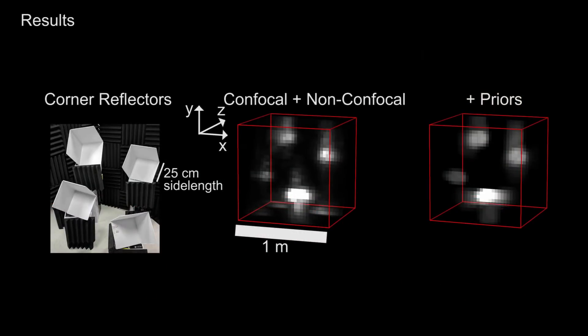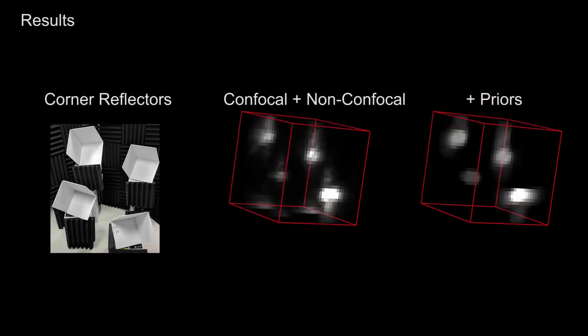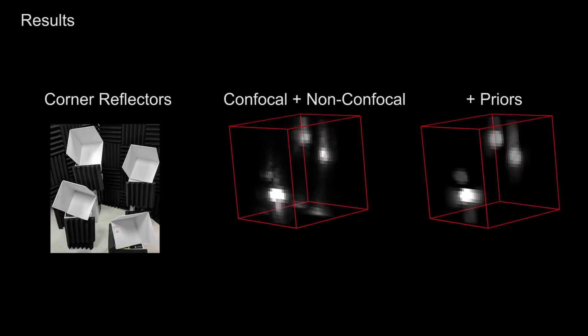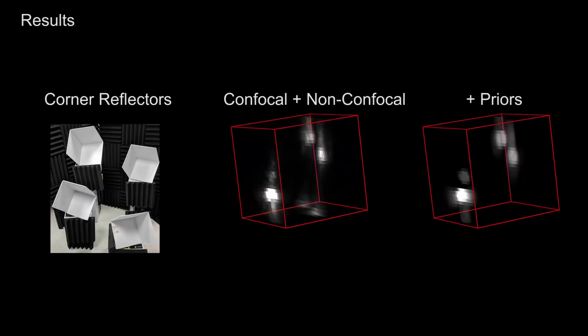This result reconstructs the relative position of four corner reflectors positioned around the corner from the acoustic array. Their corner geometry provides a strong retroreflective scattering response.